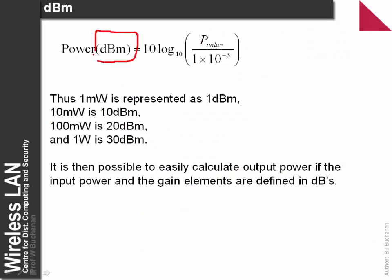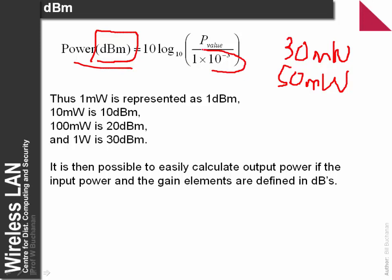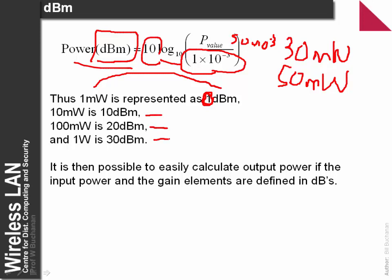Another key term is dBm — power relative to 1 milliwatt. Most powers we deal with are much less than 1 watt. We typically deal with 30 or 50 milliwatts as maximum power. We calculate power as the ratio to 1 milliwatt, take log base 10, and multiply by 10. So 1 milliwatt is 0 dBm, 10 milliwatts is 10 dBm, 100 milliwatts is 20 dBm, and 1 watt is 30 dBm.